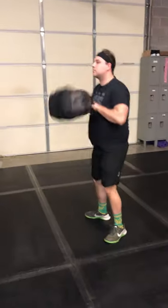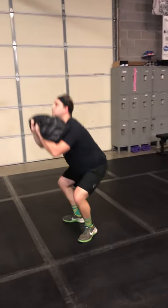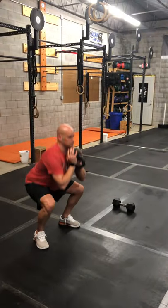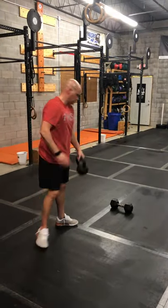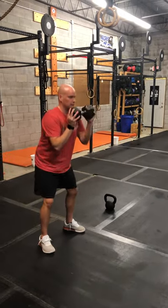Front squat or goblet squat—all the way down, all the way back up, full range of motion. With either a kettlebell or dumbbell, you can hold the dumbbell horizontally or vertically, whichever feels most comfortable to you.